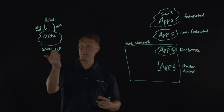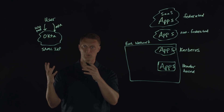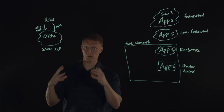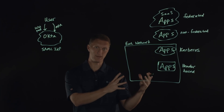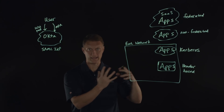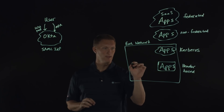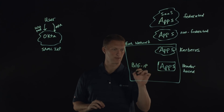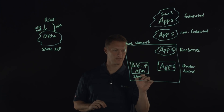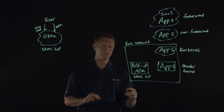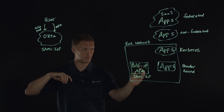Okta is set up as the SAML identity provider here, but it can also be set up as a service provider — or both simultaneously. Likewise, the Big IP can be set up as a SAML identity provider and/or service provider. In this specific example, Okta is the SAML identity provider, and the Big IP APM — the Access Policy Manager — is the SAML service provider.